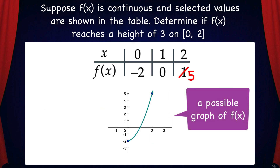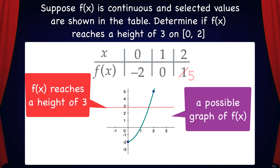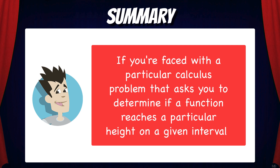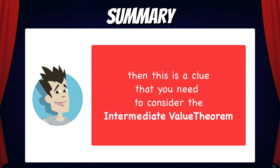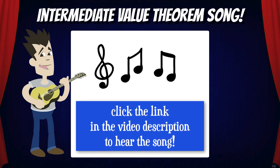Here's a possible graph of f(x) in this new scenario. As you can see, f(x) passes through all the given points and it also reaches a height of 3 on the given interval. So in summary, if you're faced with a calculus problem that asks you to determine if a function reaches a particular height on a given interval, this is a clue that you need to consider the Intermediate Value Theorem. To help you memorize this theorem, I encourage you to listen to my Intermediate Value Theorem song, which will help you get the big ideas into your mind through music.